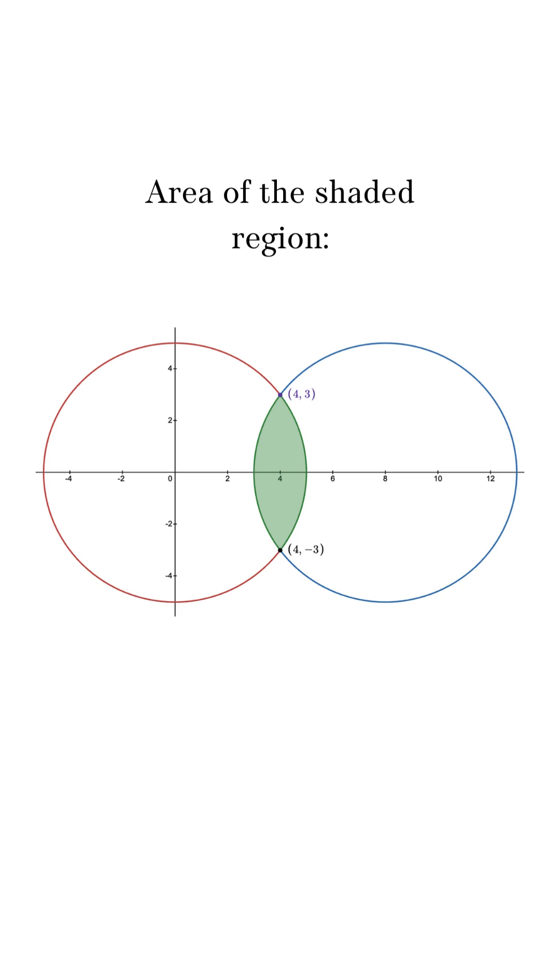Now, if we multiply this by 2, we would get the area of the shaded region, which is going to be 8.175 units squared. And that is our answer.